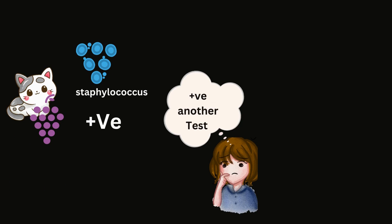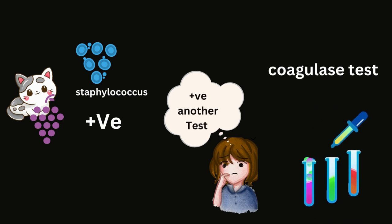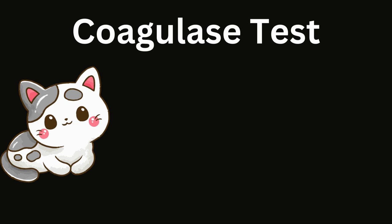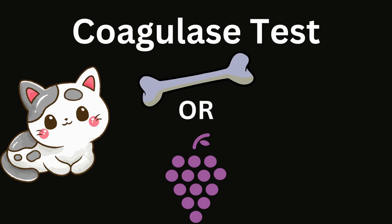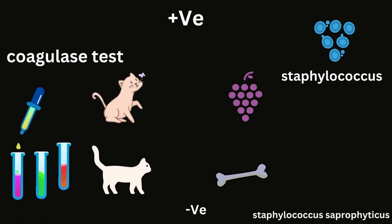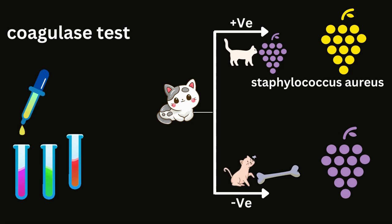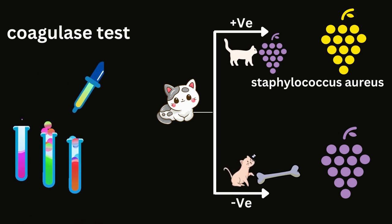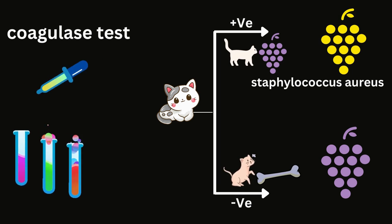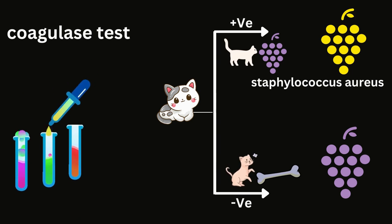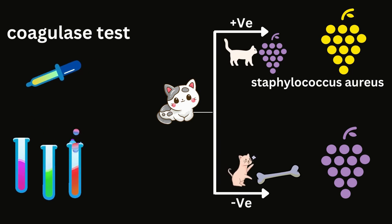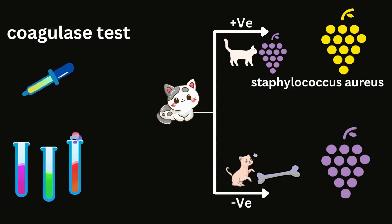Let's discuss the algorithm for the cat, or the staphylococcus bacteria. Once we know we're dealing with a cat, we put them under the coagulase test. It is a test where we give the cat an option to choose between a bone and grapes. We obviously want our kitten to pick the grapes because that's what it's associated with — staphylococcus. The kittens that select the grapes are the golden kids, or staphylococcus aureus, since they give a positive coagulase test. This bacteria is observed as golden under the microscope.